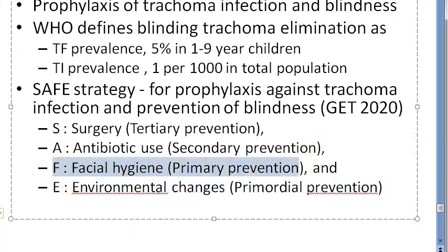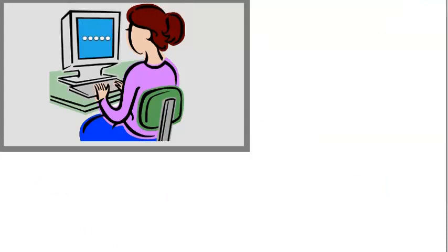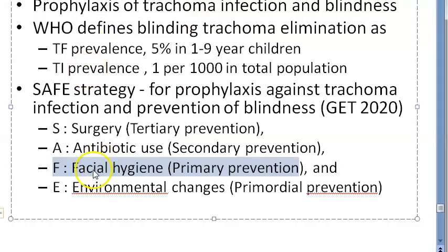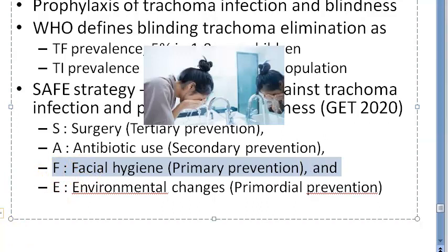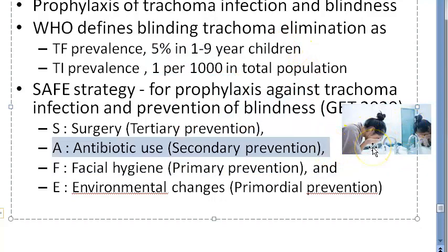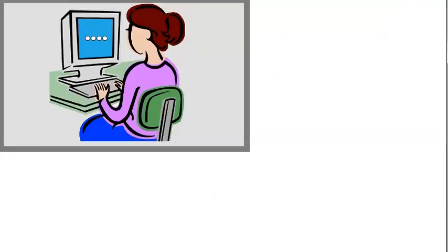Primary prevention involves facial hygiene: frequent face wash with clean water, and avoiding shared towels, surma rods, or kajal applicators. Secondary prevention is antibiotic use once the disease occurs to prevent further progression — tetracycline, erythromycin, and azithromycin are used. Mass antibiotic therapy and annual reassessment of prevalence are also part of this strategy.